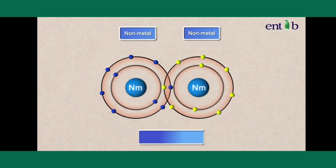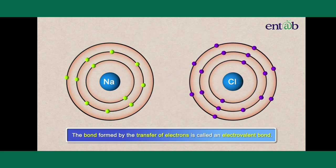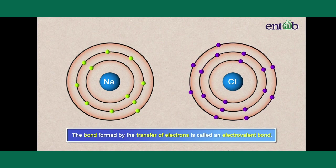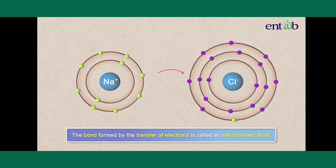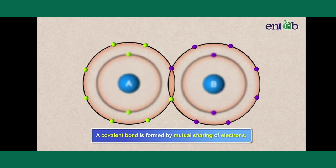Whereas when the non-metals react with other non-metals, they form covalent compounds containing covalent bonds. An electrovalent bond is formed by the transfer of electrons, while a covalent bond is formed by the mutual sharing of electrons.